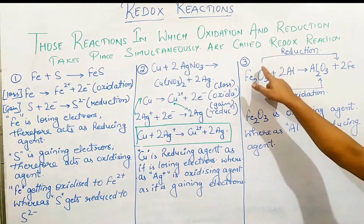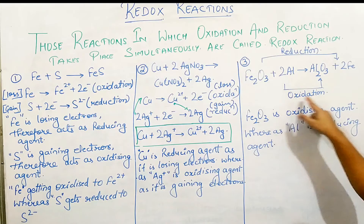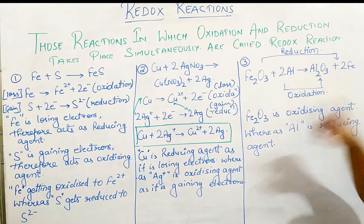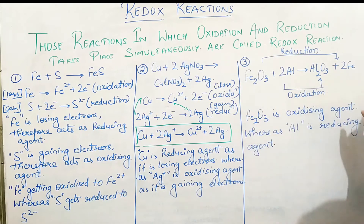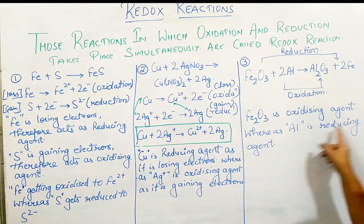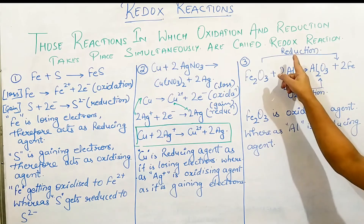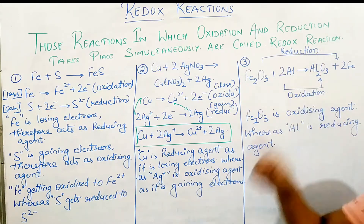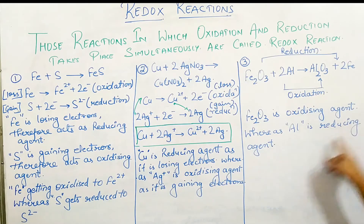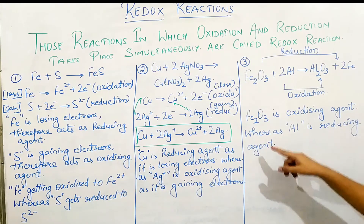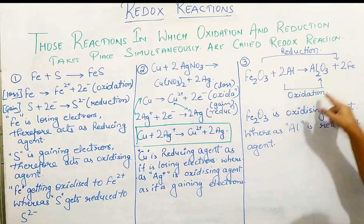In this reaction, ferrous oxide undergoes a reduction reaction, so it works as an oxidizing agent — gaining electrons. Aluminium undergoes oxidation, losing electrons, so aluminium is the reducing agent. Losing electrons means oxidation reaction.